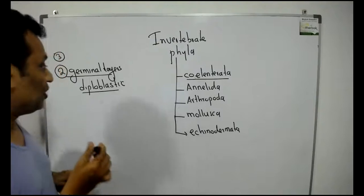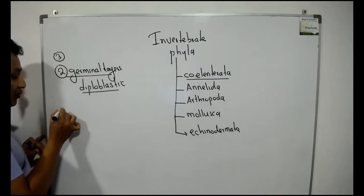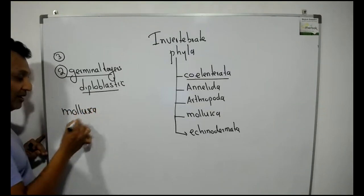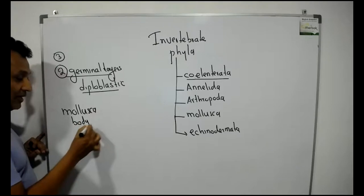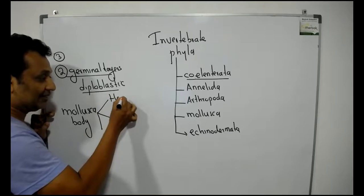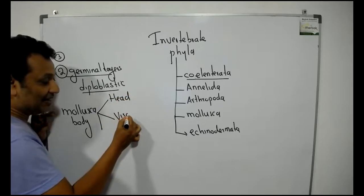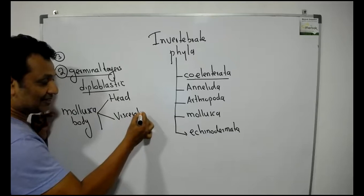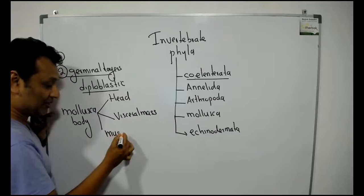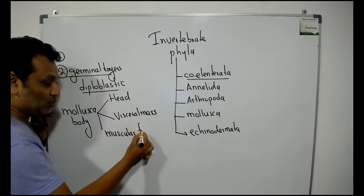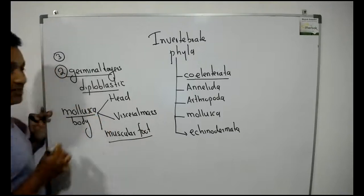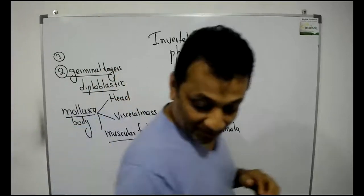Presence of muscular foot. If you take a mollusca body, it is divided to three regions. There is a head, there is a visceral mass, and a muscular foot. So if I use the word muscular foot, you have to remember mollusca. So B is mollusca.